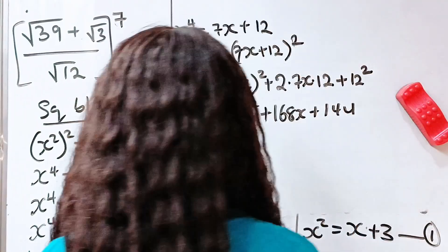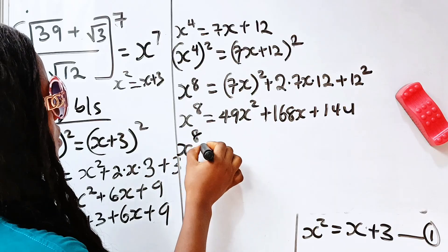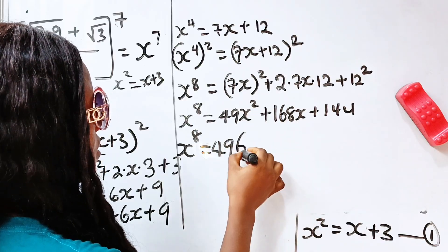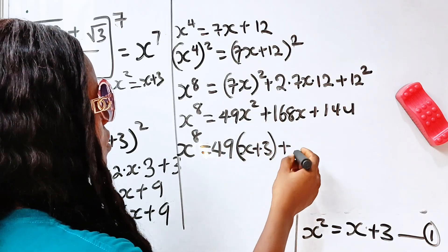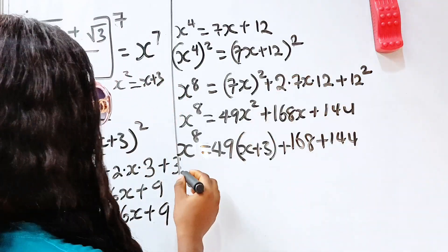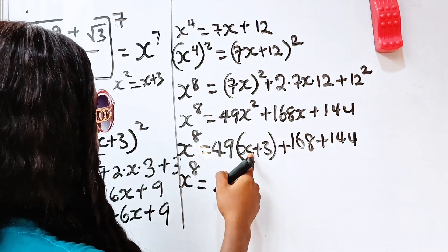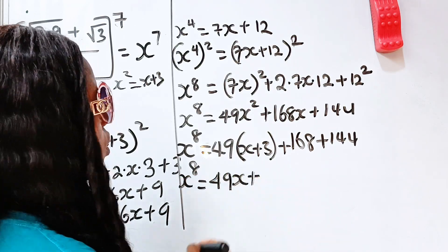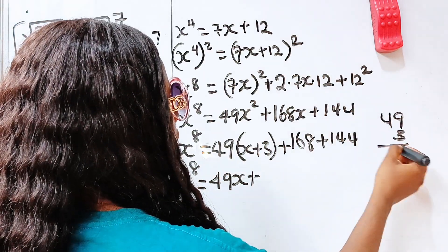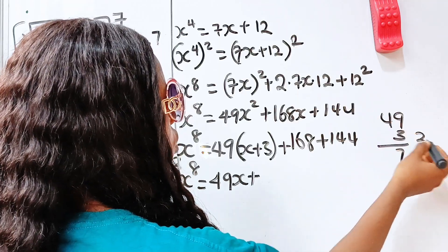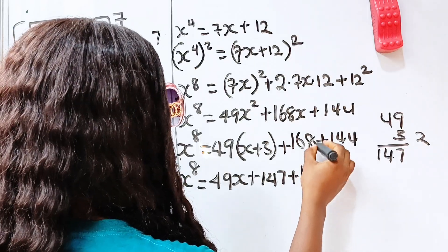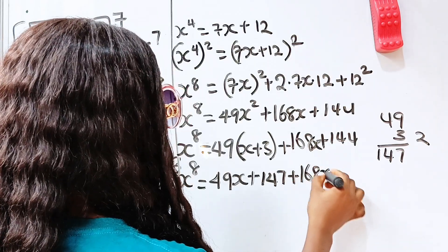Now, anywhere we see x squared, we replace it with x plus 3. So x to the power of 8 equals 49 times (x plus 3) plus 168x plus 144, which expands to 49x plus 147 plus 168x plus 144.